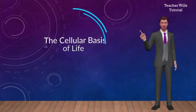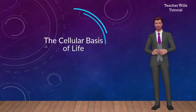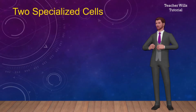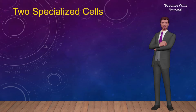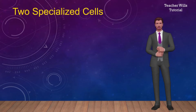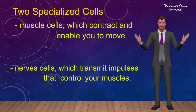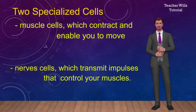The cellular basis of life, as part of the unifying themes in the study of life, all organisms are made up of cells. The cell is the basic unit or the building block of life. If an organism is made of only one cell, it is called unicellular. On the other hand, if an organism is made up of many cells, it is called multicellular. Most multicellular organisms have cells that are specialized for different functions. Two specialized cells in your body are your muscle cells, which contract and enable you to move, and your nerve cells, which transmit impulses that control your muscles.